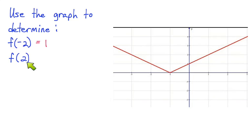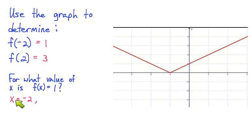Okay, now let's find f of 2. So when x equals positive 2, y equals 3. Alright, and let's do it the other way. For what value of x is f of x equal to 1? Well, I already wrote the answer here.